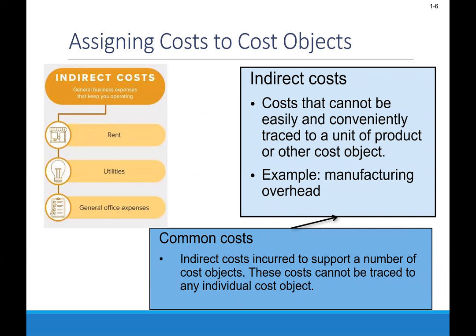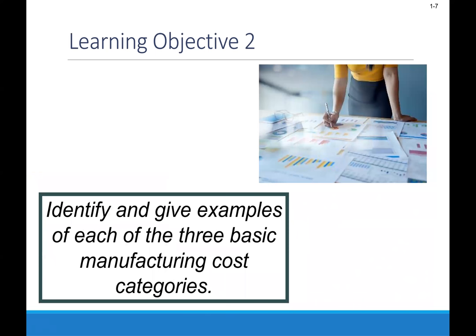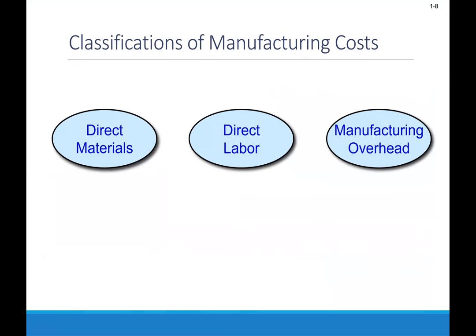Indirect costs are not easily traced to a unit of product or other cost object, such as a big grouping called manufacturing overhead. Indirect costs are incurred to support a lot of different cost objects, and they can't easily be traced to just one. Product costs can be broken down into direct materials, direct labor, and manufacturing overhead.